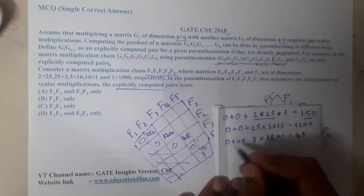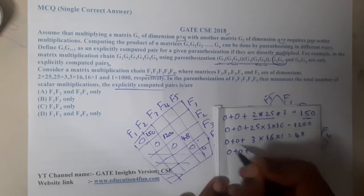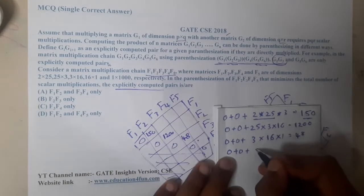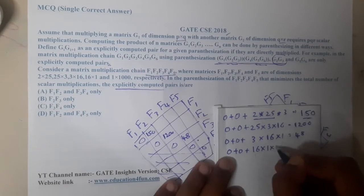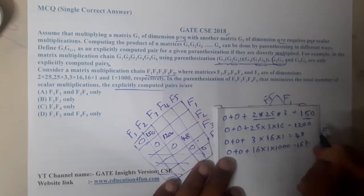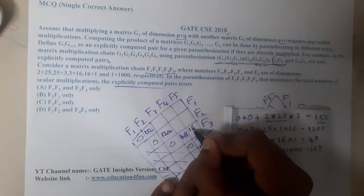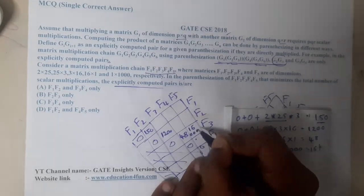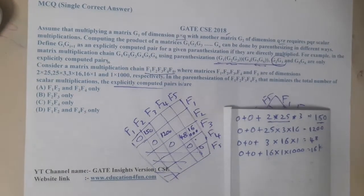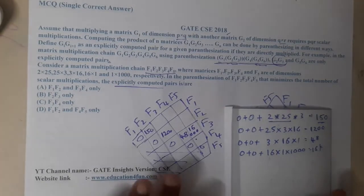For f4×f5, the result is 0 + 0 + 16×1×1000 = 16,000. So now we have the first layer of the DP table complete: 150, 1200, 48, and 16,000.